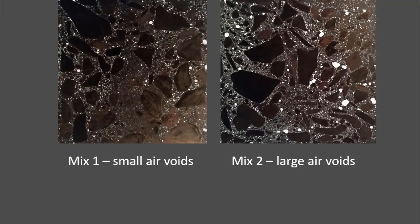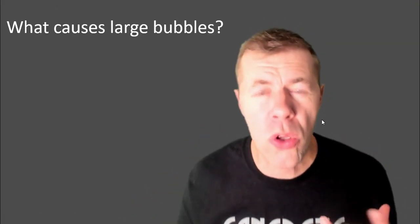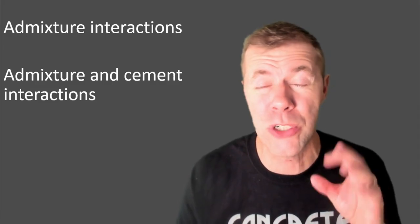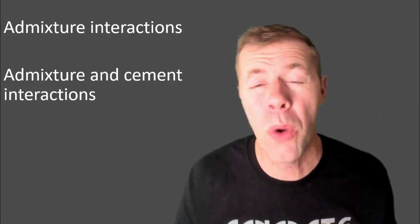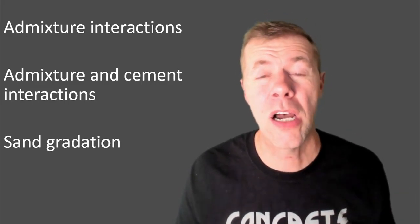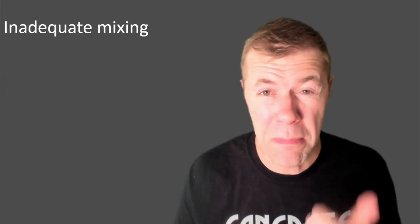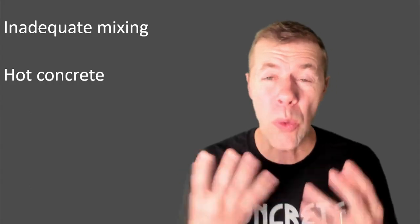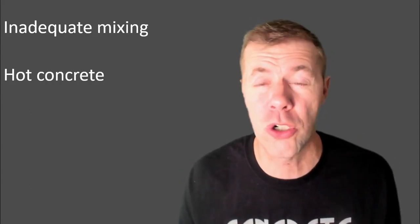Here are two air void systems shown in hardened concrete — we've polished it, colored it black, and put white powder in the pores. The one on the left, mix one, has mainly small voids. Mix two has big, nasty, scary, evil bubbles. What causes these large bubbles? There are admixture interactions — when two admixtures don't play well together — or when admixtures and cement don't play well together. Different gradations of sand can cause coarse air void systems. Inadequate mixing — not mixing the concrete long enough — can also cause it. And hot concrete: when things get really hot, your air void system gets more coarse.